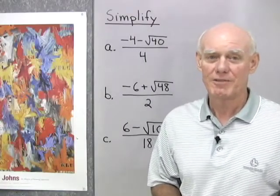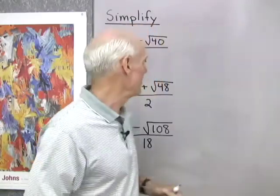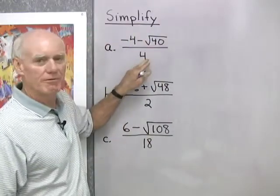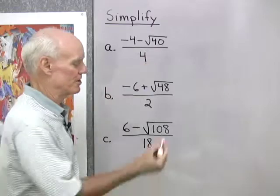Okay, a few more expressions involving radicals and fractions for us to simplify. First right here I have negative 4 minus square root 40 all divided by 4. I want to simplify this.